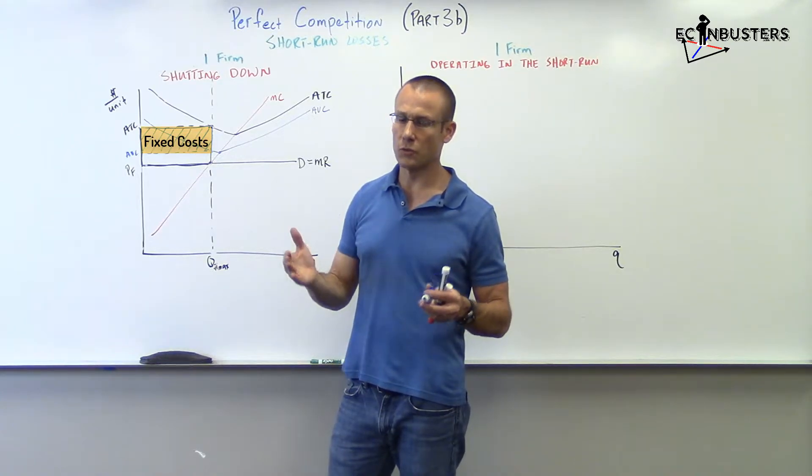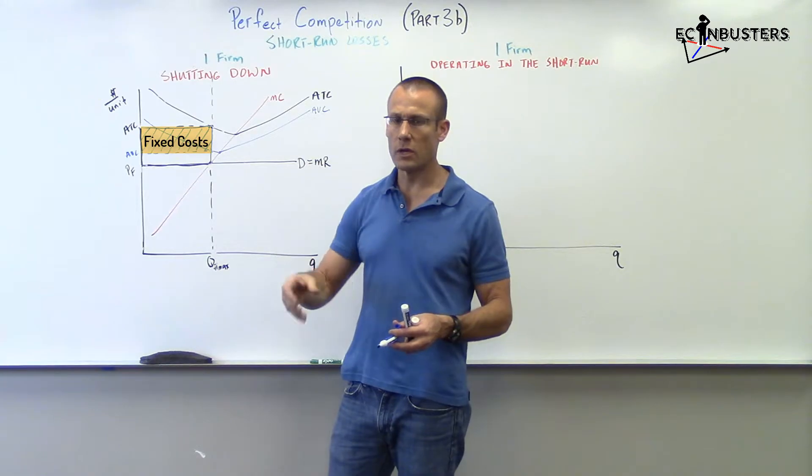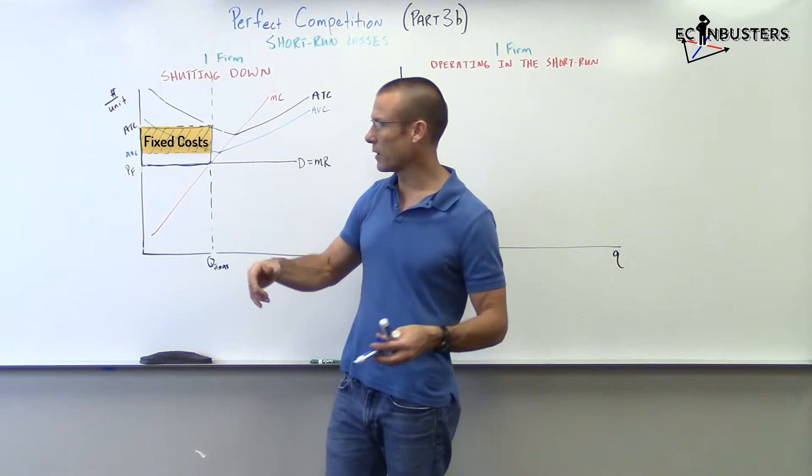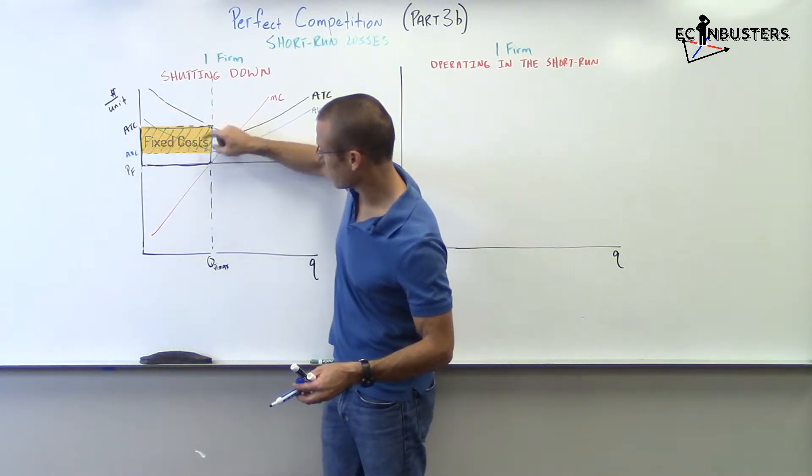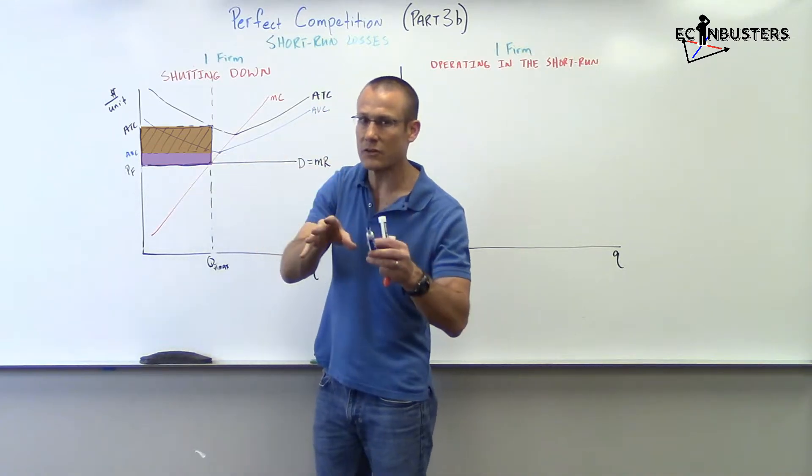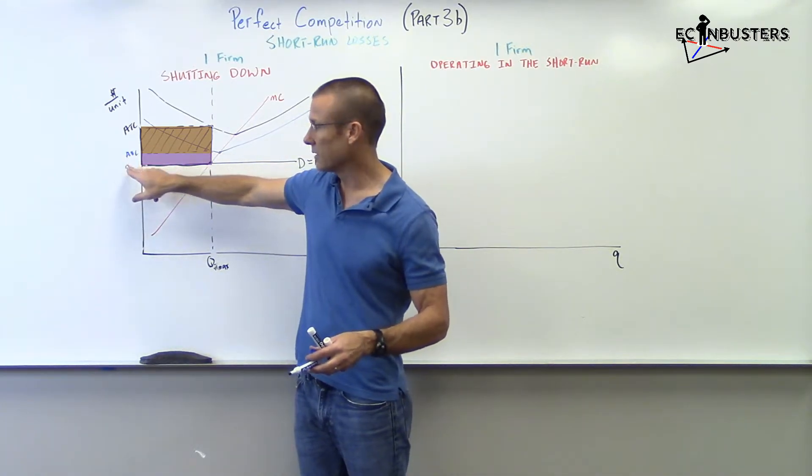You're going to incur those losses, but you've got a decision to make. Should I operate? Should I not operate? If I operate, this rectangle are going to be my losses if I operate. If I shut down, fixed cost equals that rectangle right there. Well, what should you do? You should minimize your losses. So, how much should you produce? Zero.